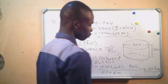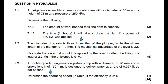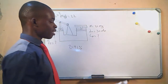We now go to Question 7.2. The diameter of a ram is three times that of a plunger, while the stroke length of the plunger is 110 millimeters. The mechanical advantage of the lever is 22. Calculate the force that should be applied by the lever to lift a load of 2.2 megagrams, if the efficiency is 91 percent.